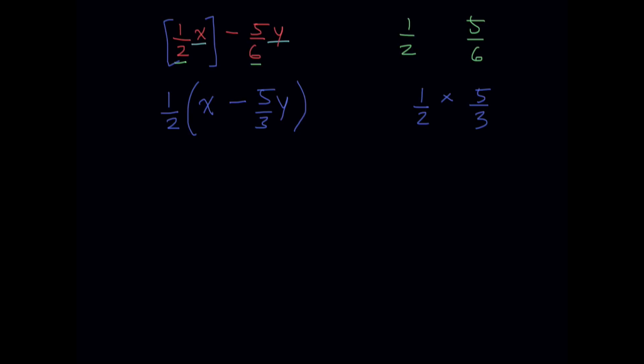So this would be the simplified expression. And you can check that by simply multiplying it again. So I just have to expand the bracket. 1/2 times x is 1/2x, and 1/2 times negative 5/3 is negative 5/6y. And that is the original equation, so this simplification is correct.